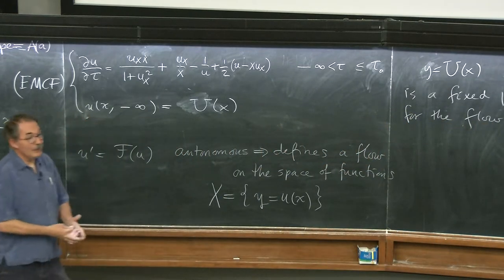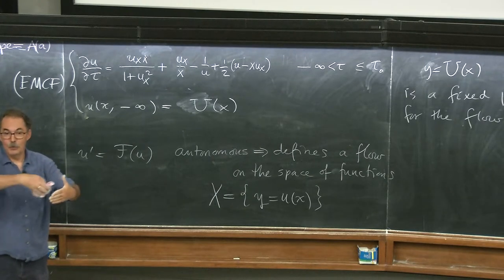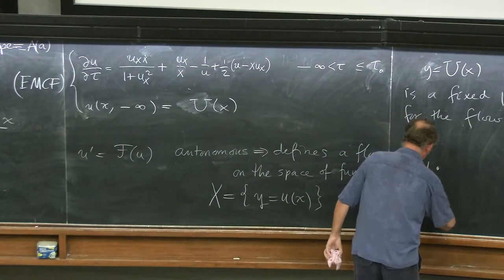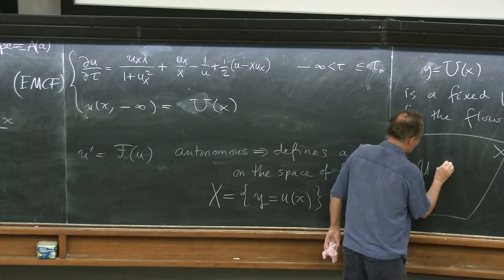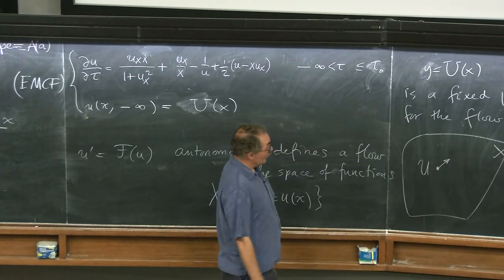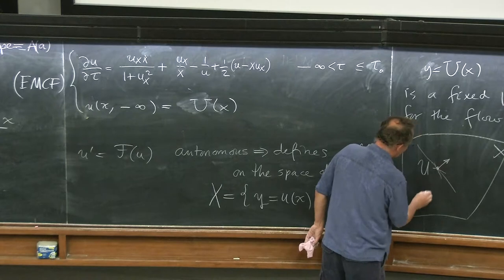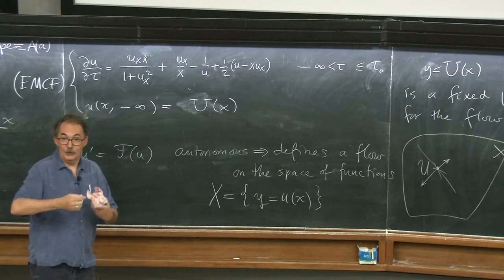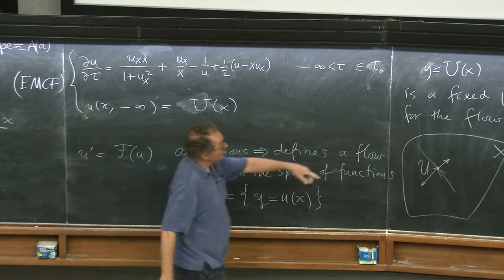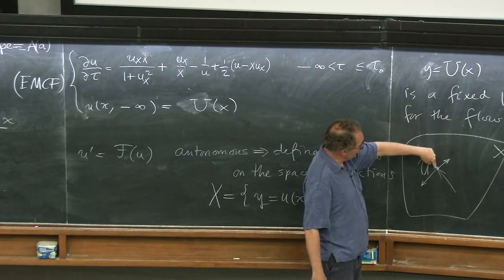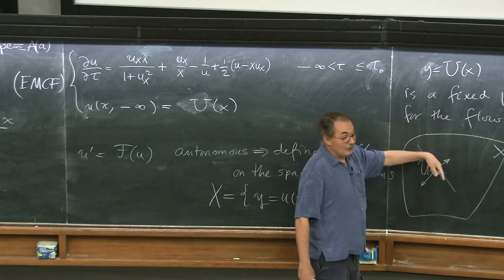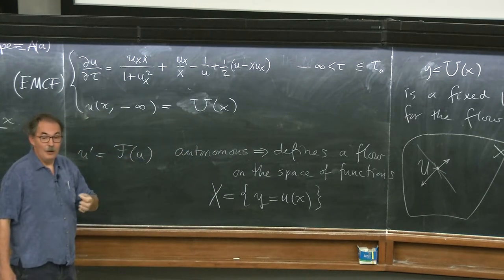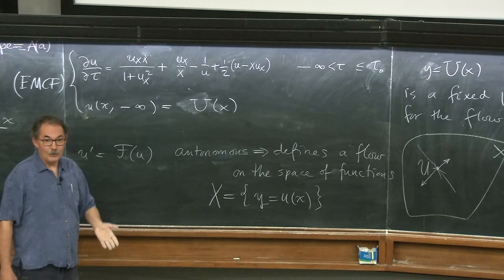We're trying to find a solution that at time minus infinity starts at the fixed point and then moves away from it. In ODE theory, we want the unstable manifold. The standard way of finding the unstable manifold of a fixed point of a nonlinear system is to linearize at that fixed point, look at the eigenvalues, and find positive eigenvalues. If phi is much smaller than U in norm, then phi' = f(U + phi) equals f(U) plus df(U)·phi plus order phi squared. Since f(U) equals zero (fixed point), the linearized equation is just phi' = df(U)·phi.